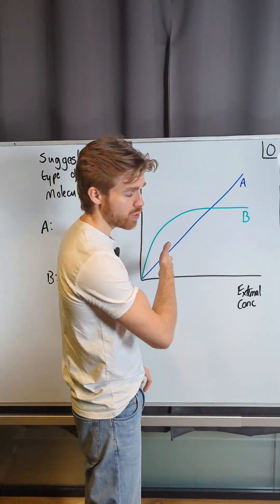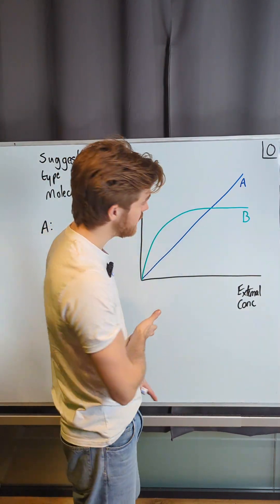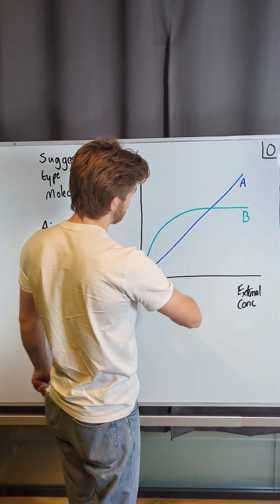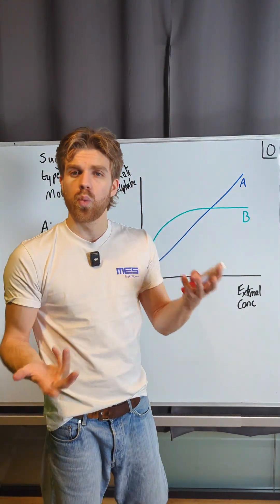Looking at the shape of the graph, we've got two distinct shapes. A is a proportional line, a linear relationship, whereas B is increasing rapidly and then plateaus. So what are we talking about here?